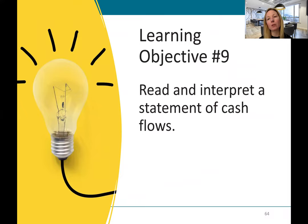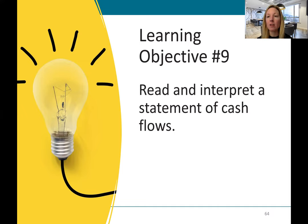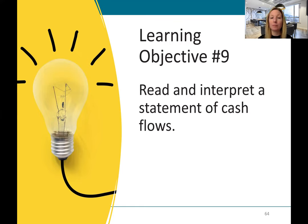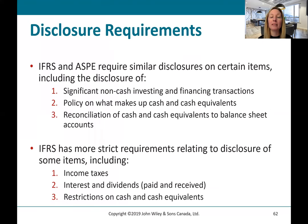For Learning Objective Number 8, what really matters is that when we're preparing a statement of cash flows, we're going to have a section at the bottom called Supplementary Information. There we list any non-cash transactions, such as buying land in exchange for shares. Under IFRS, we also need to disclose income taxes and interest and dividends paid in that Supplementary section if it's not clear from your cash flow statement, as you've seen in the tutorial examples.